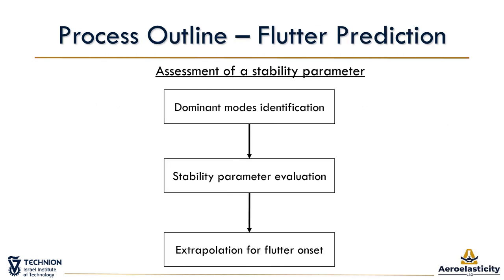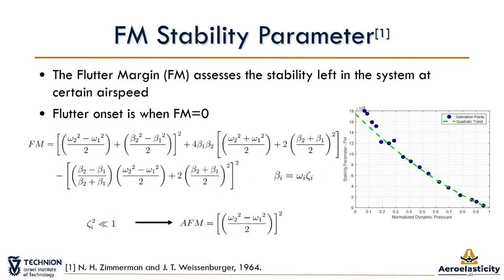The second step is to get an assessment of the stability parameter. From all modes obtained, we need to identify the dominant modes that participate in flutter and calculate the stability parameter at each pre-flutter airspeed. Then we fit a trend and make an extrapolation to find the flutter onset. The stability parameter used in the study is flutter margin, FM, which measures how much stability is left in the system at a certain airspeed. The criterion was developed for an analytical case of a two-degrees-of-freedom system, based on Routh's stability criteria.